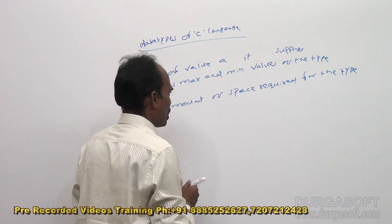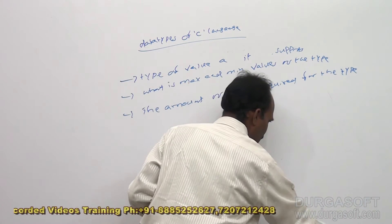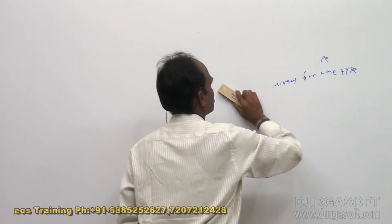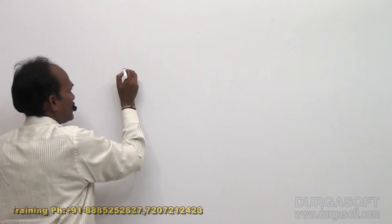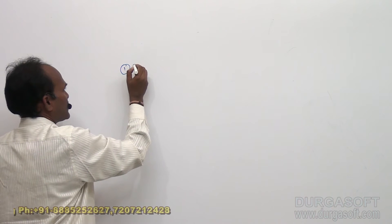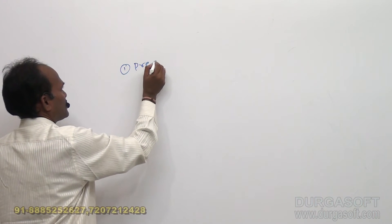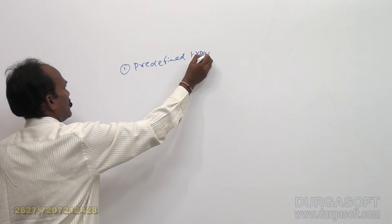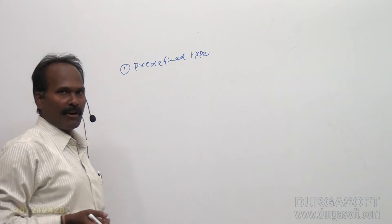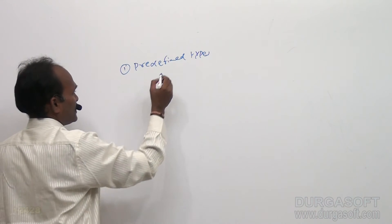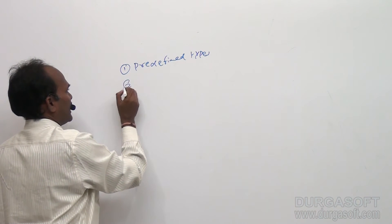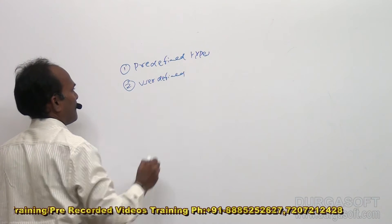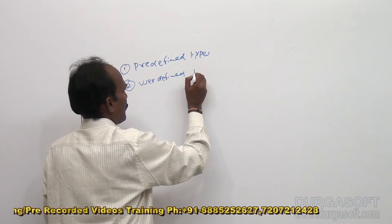Mainly they are divided into these categories. What is the first type? First one is predefined types. Predefined means so all predefined types are defined by C language developer. Developer means they come with C language software. Second category is user defined, user defined types.